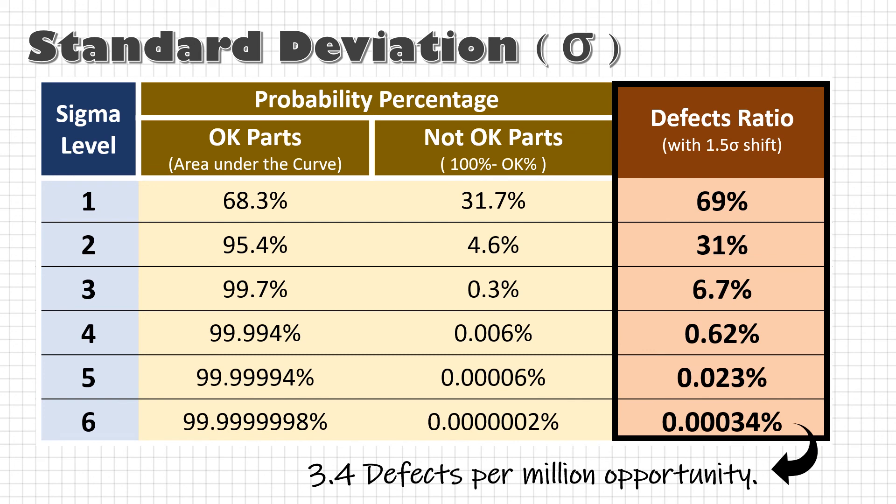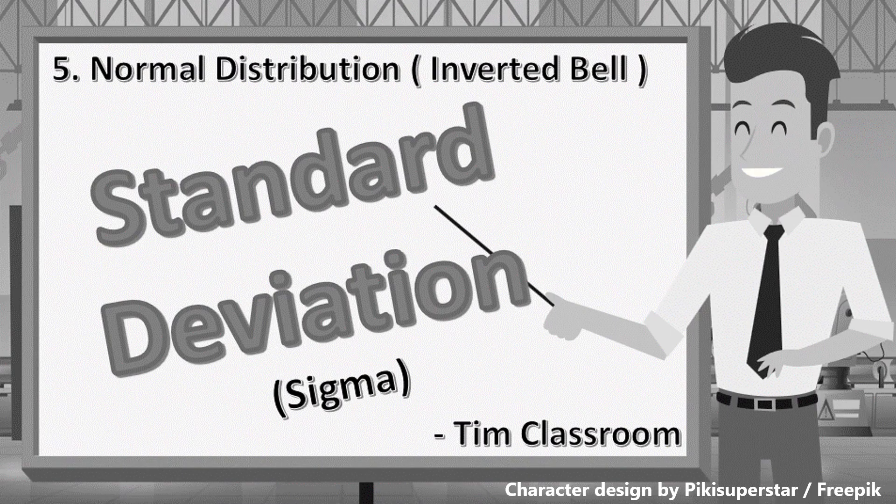See, with standard deviation, how easily we can identify if my process is capable to meet the customer requirement. This was a tough lesson. Take your time to understand this concept. We are going to explore more on the concept of process capability and performance in the next lesson. See you there.